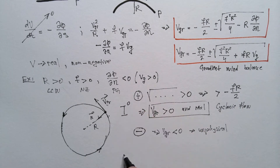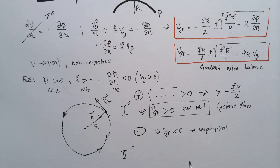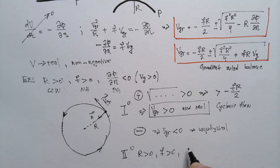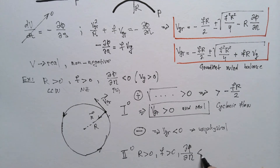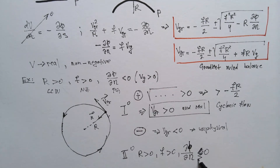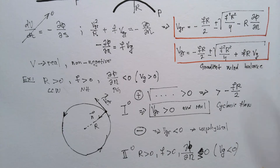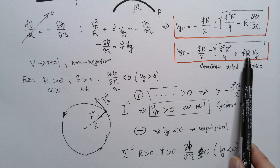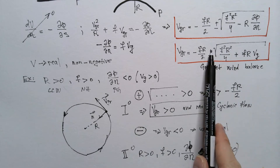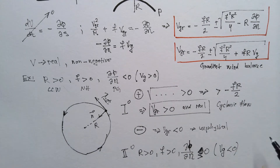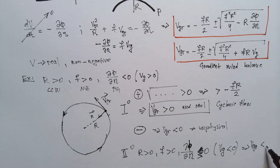For case 2 — everything the same as before but with reversed pressure gradient, so ∂Φ/∂N is positive (equivalently Vg is negative) — in either choice of sign in front of the root, the result gives V gradient as a negative number. That is also an unphysical solution.